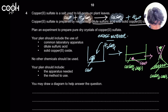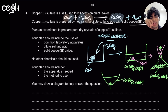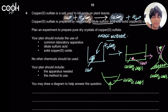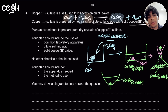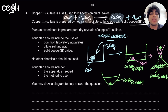Pour the filtrate into an evaporating dish and heat it until the point of crystallization — the temperature at which crystals start to form. Then let the solution cool down, because soluble solids become less soluble at lower temperatures. As the solution cools, crystals form. Filter them out and dry them by gently sandwiching them between two filter papers.